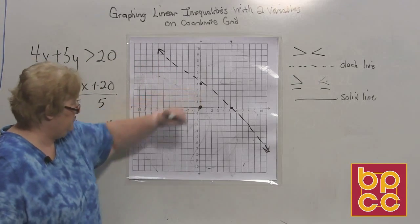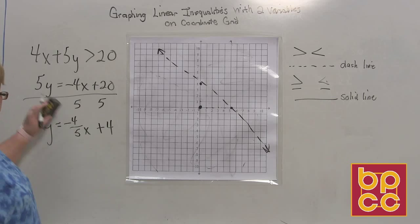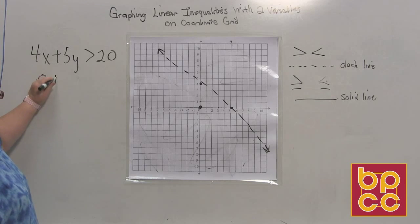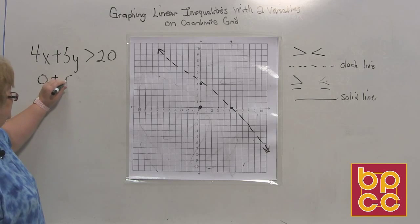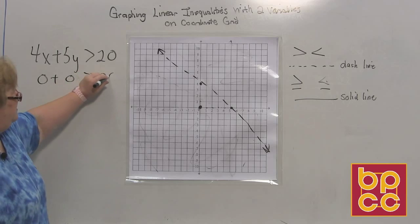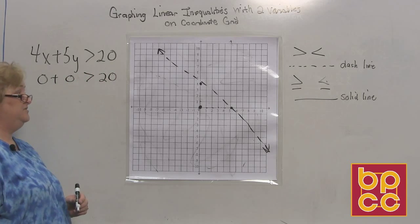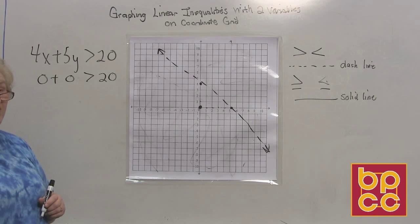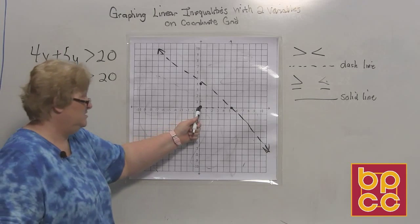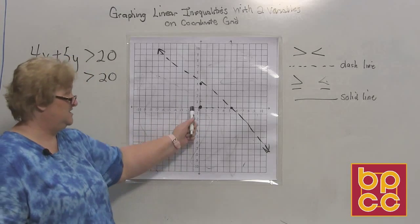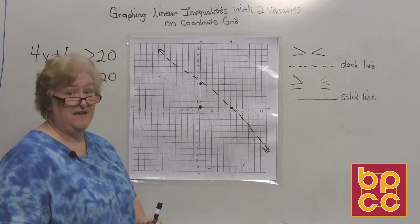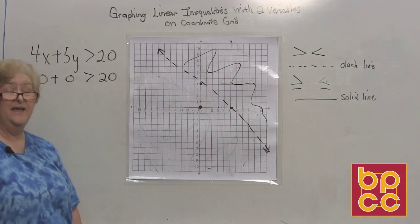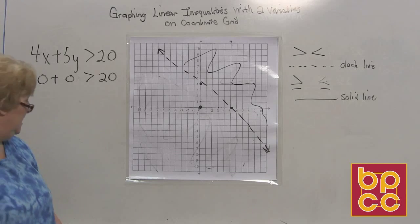Let's test (0, 0). Going back to the original: 4 times 0 is 0, plus 5 times 0 is 0, greater than 20. Zero is bigger than 20 — that is not true. So (0, 0) fibbed to us, meaning we do not shade that side. We're going to jump to the other side of the boundary line away from (0, 0), and all of that area will be the possible answers — the whole other side gets shaded.